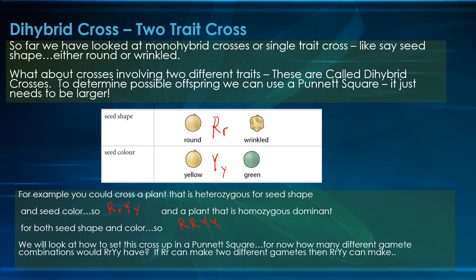We'll look at how to set these up in a Punnett square. For now, let's think about how many different gamete combinations we would have with the RrYy plant. Remember that when we had big R, little r, it had two possible gametes: big R and little r. So with two traits, it's going to end up having: big R big Y (one), big R little y (two), little r big Y (three), little r little y (four).